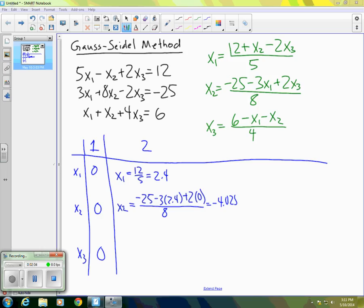So that's our second x2. And now for our second x3, we again use our equation above and to the right, but we use the most recent values we have for x1 and x2. So we have 6 minus 2.4 minus negative 4.025, and that's all divided by 4. And that comes out to be 1.90625.